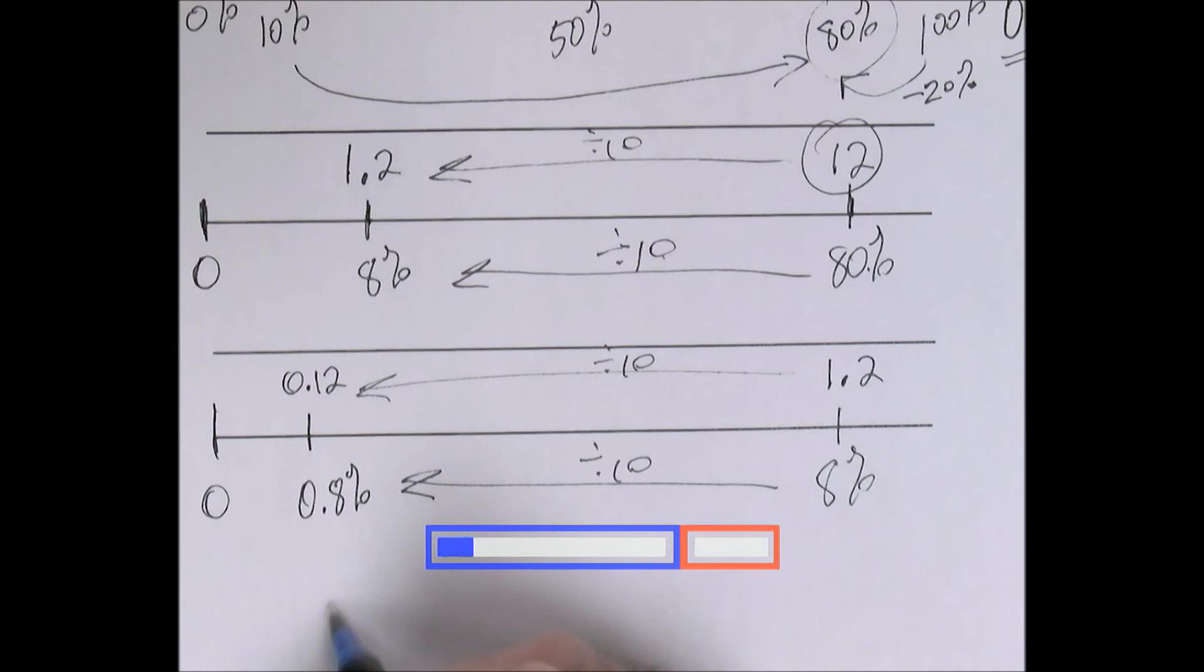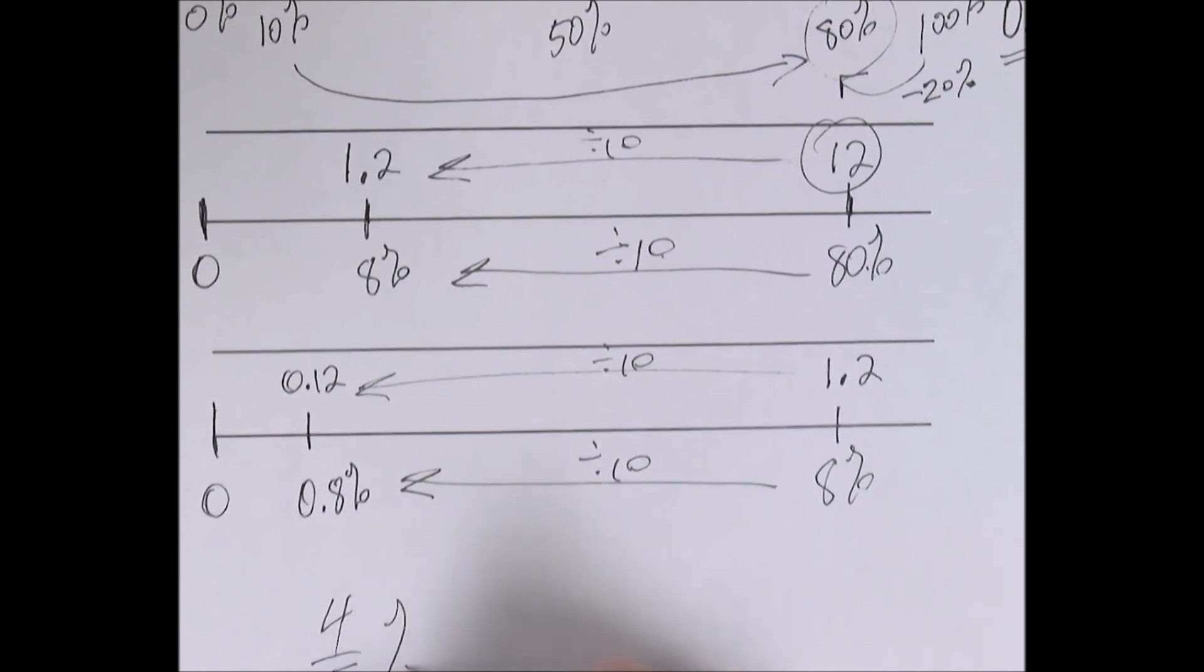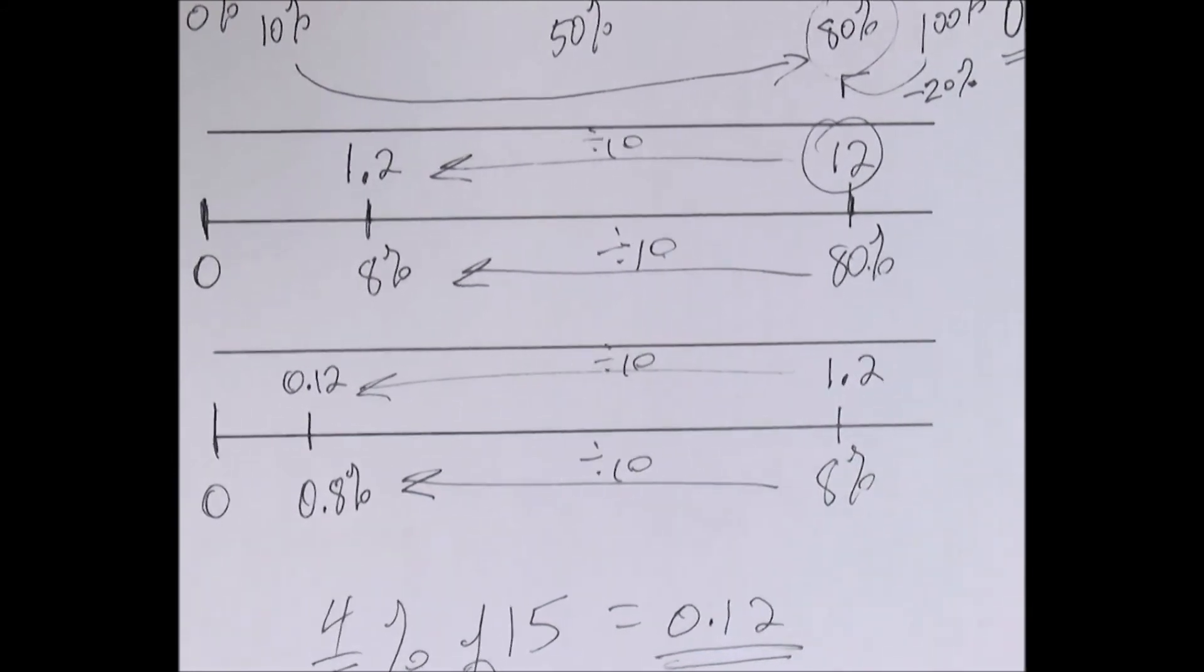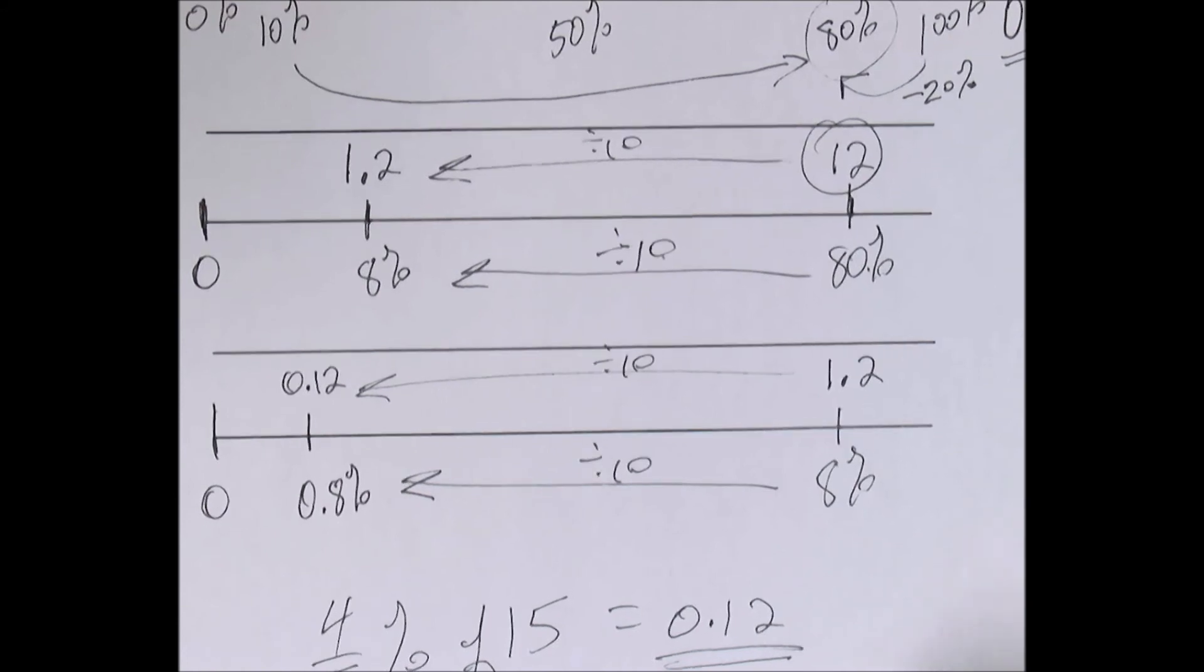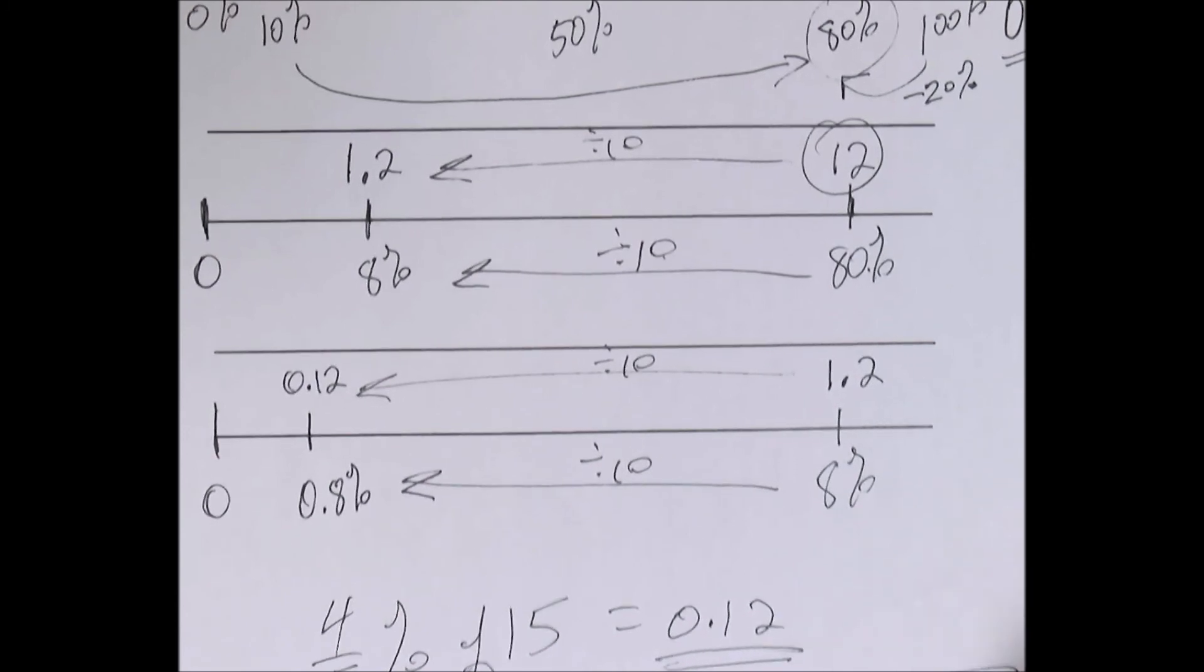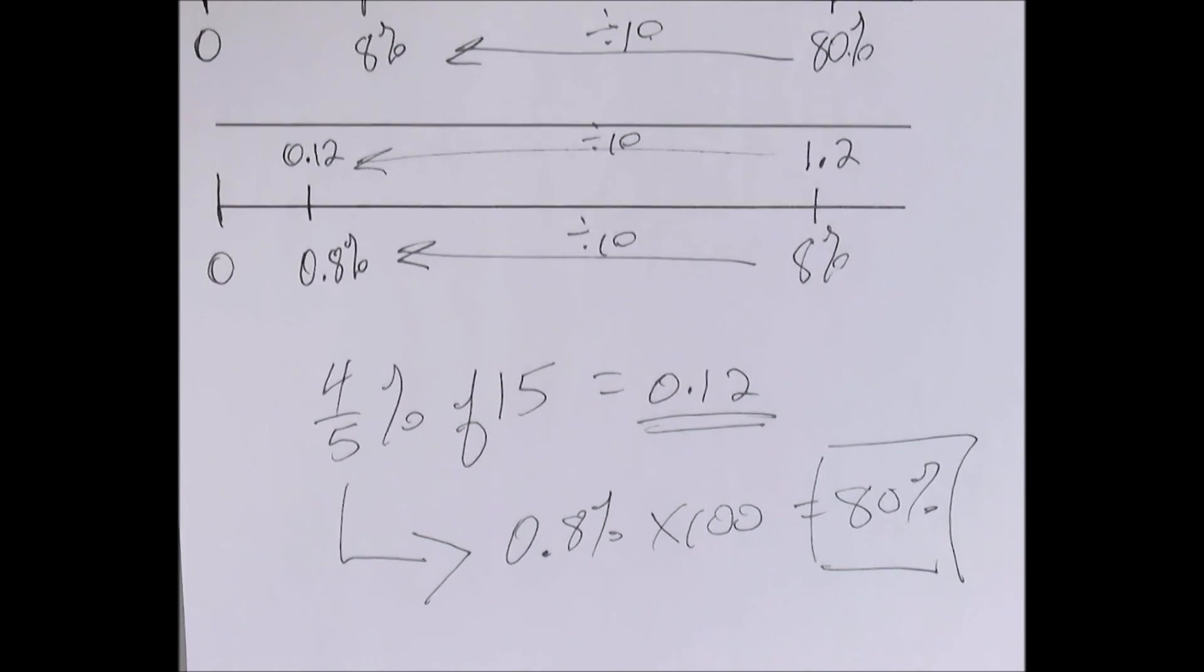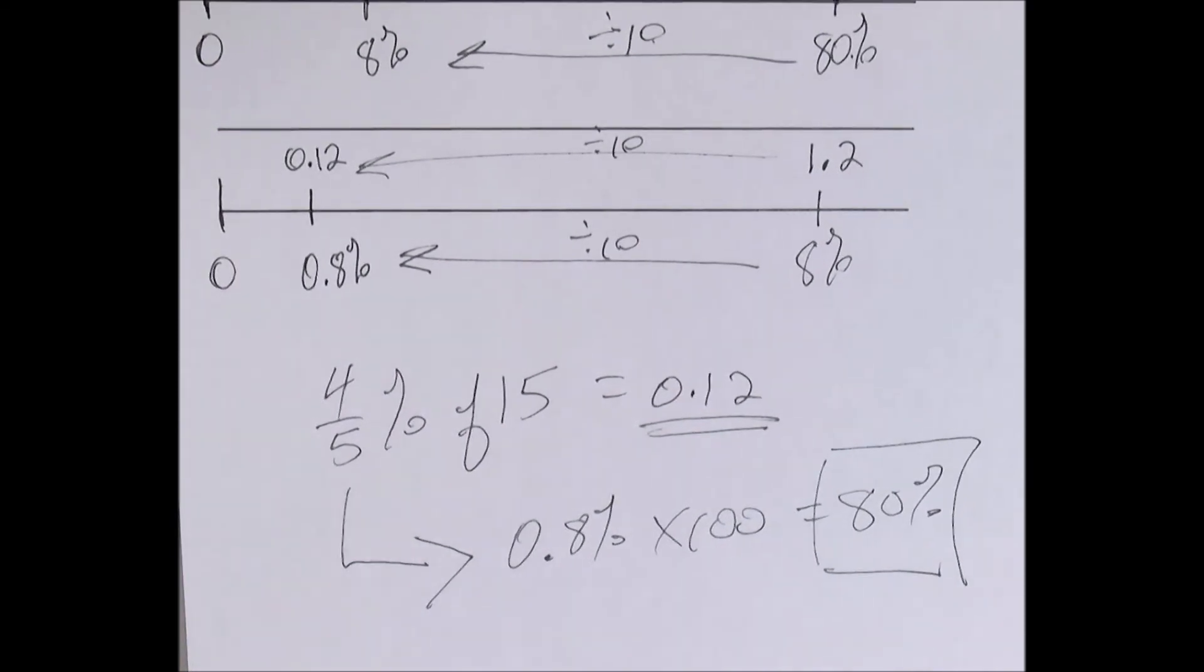So in the end, you can say four-fifths of a percent of 15 is 0.12. Could you do that with mental math? You could if you make that connection to 80 percent somehow as a starting point. Matthew, does that answer your question? Yes.